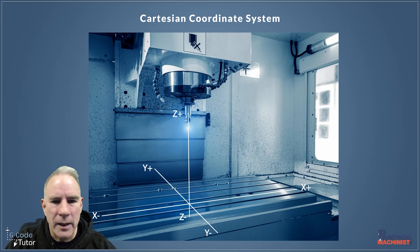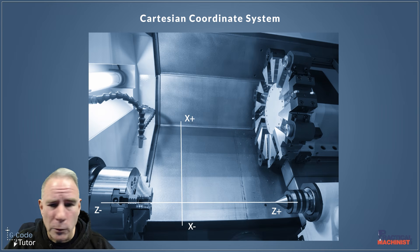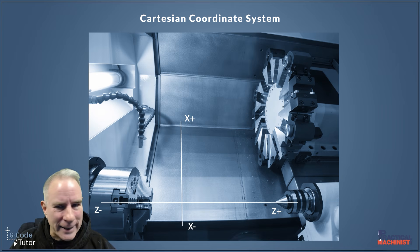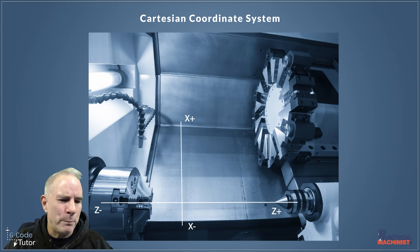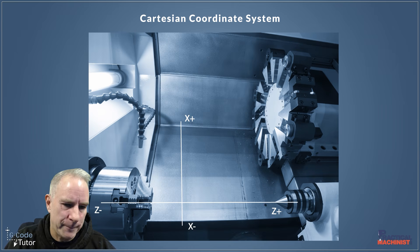On a lathe it looks more like this, and we may have more axes on a lathe also. The tailstock there can be swapped out for a second-op collet and that can move in on the B axis. Our tool turret at the top can move back and forwards on a Y axis as well, and mill-turns have even more axes. So that's the basic axes and movement directions we'll probably see on your average lathe.